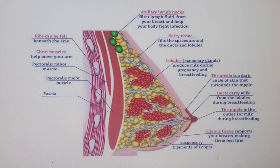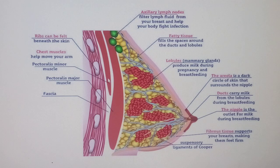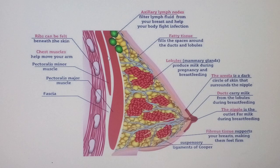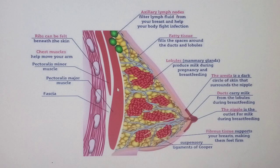Looking at the functional parenchyma of the breast: the breast lies on the pectoralis major muscle, which is the bed of the breast. Deep to it we have pectoralis minor. The pectoralis major has a fascia called the pectoral fascia — this is a deep fascia covering the muscle. The functional parenchyma is highly glandular.